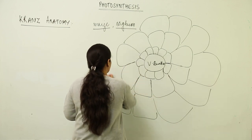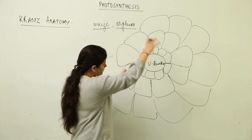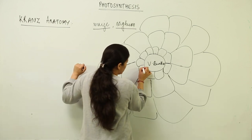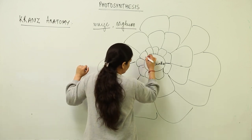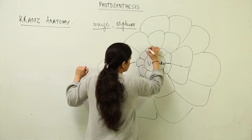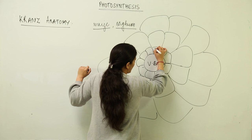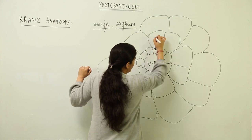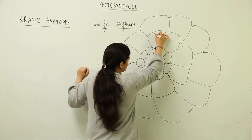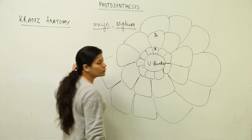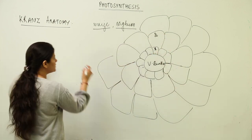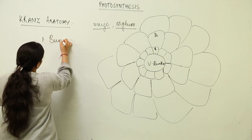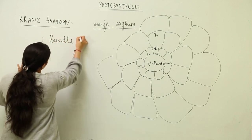There would be upper and lower epidermis of the leaf, and you can see a flower-like structure. The first layer is the bundle sheath, and the second layer surrounding it is the mesophyll. So we have bundle sheath cells and mesophyll cells as the two key cell types.